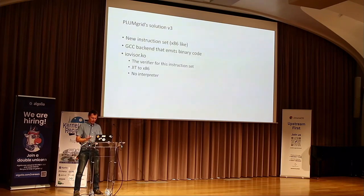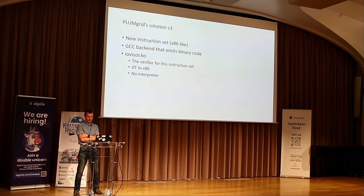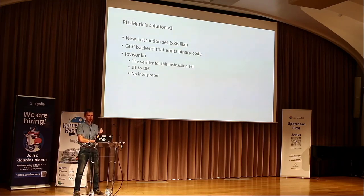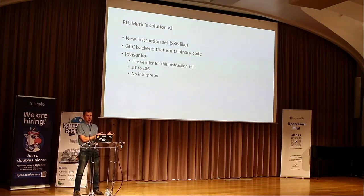It kind of worked, but we figured we could do better. So we went to version 3 of the IOvisor — remember it's a startup, everyone working super hard, let's rewrite everything! We had a new instruction set, a different GCC backend generating this special internal instruction set, a verifier checking this instruction set inside the module, and a very simple one-to-one JIT from this instruction set into x86. We didn't bother with an interpreter because performance was critical for networking.